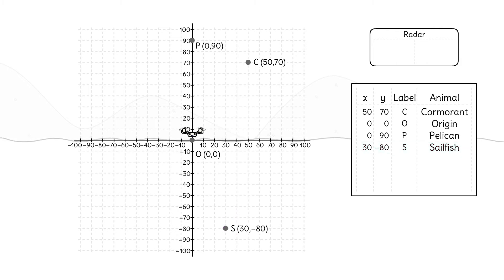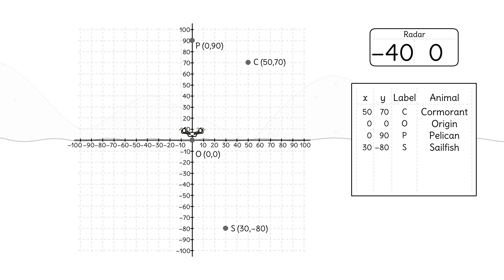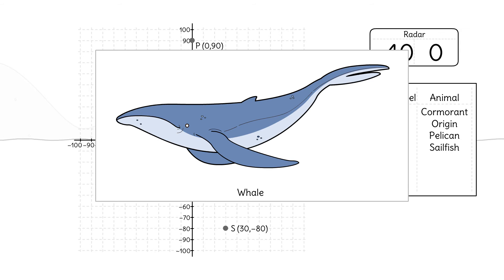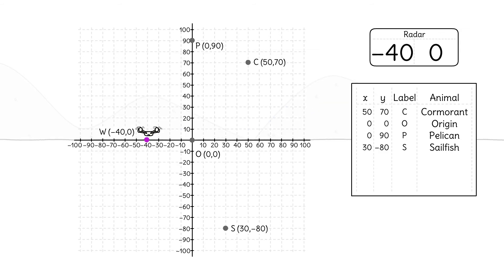Kamal's radar spots something surfacing nearby, at the point (-40, 0). A positive x-value means we move to the right. What does a negative x-value mean? We move to the left. The drone arrives at negative 40 on the x-axis. The y-coordinate of 0 means we don't move vertically. It's a whale! The drone snaps a picture and returns to the boat.